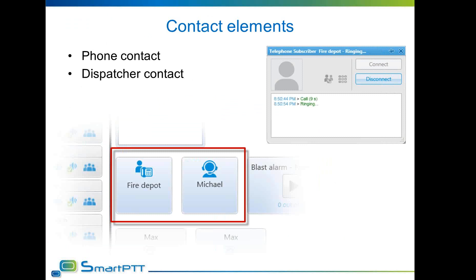Contact elements open the contact window for a corresponding dispatcher or phone subscriber on a double click. The contact window contains the latest history for those contacts, including text messages for dispatcher contacts. Connect and disconnect buttons are used to make calls, and it is also possible to initialize a conference call directly from the contact window.